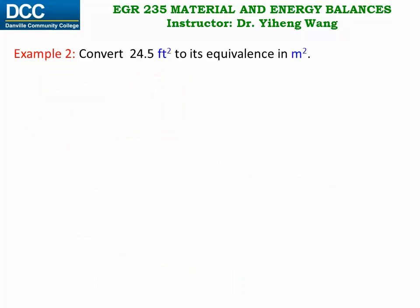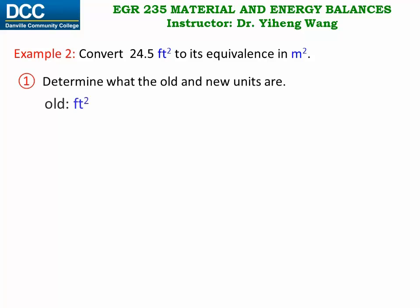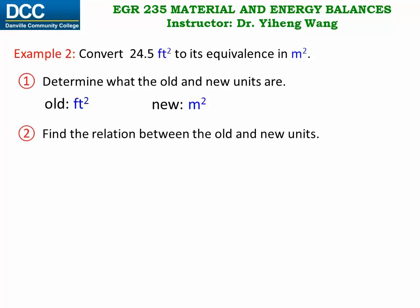Let's look at this example. We need to convert 24.5 square feet to its equivalence in square meters, and this is a quantity of area. So again we're going to follow the four-step procedure. First step: determine the old unit, which is square foot, and the new unit, which is square meter. For the second step, we need to write the equality between the two units. Now it is not likely you will find the direct relation between square foot and square meter.